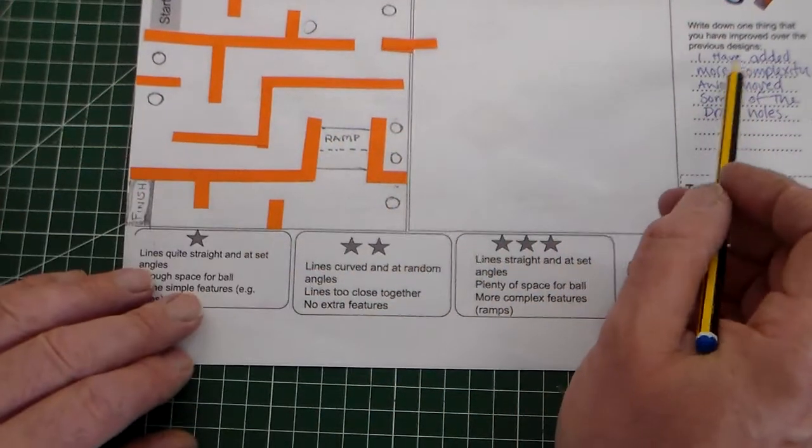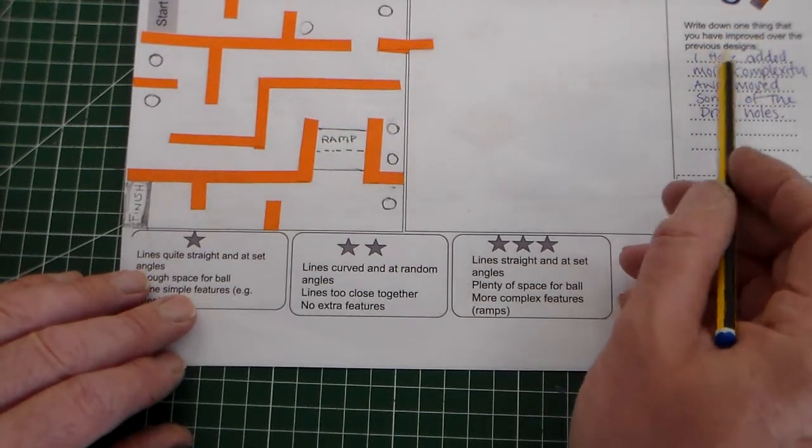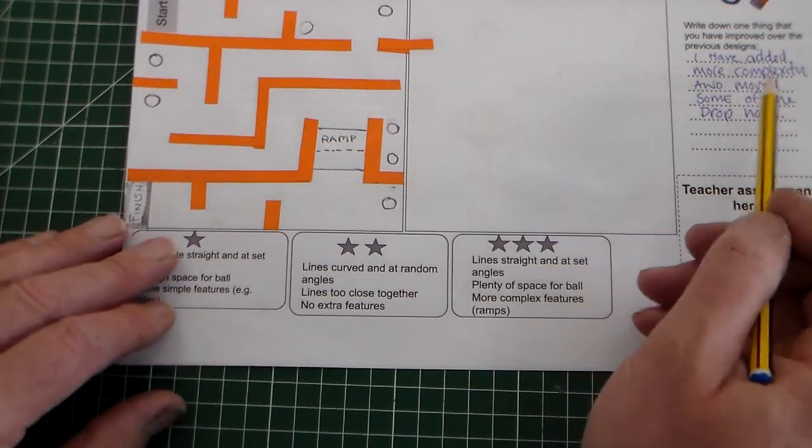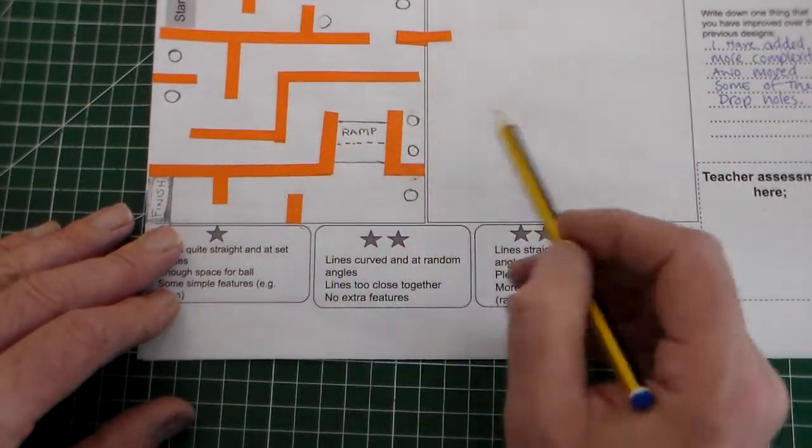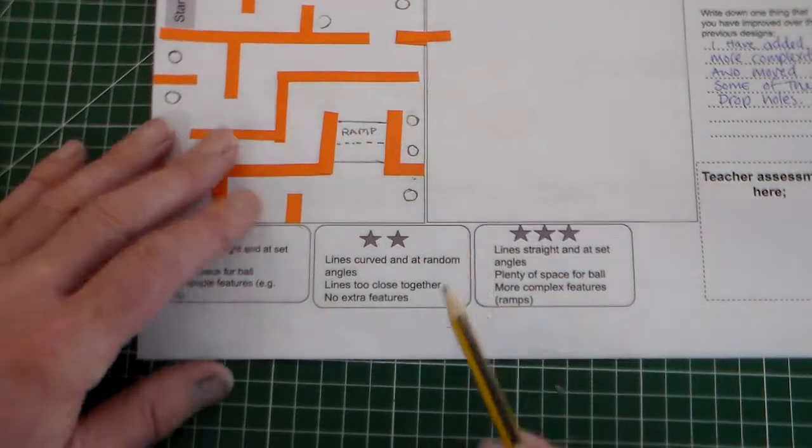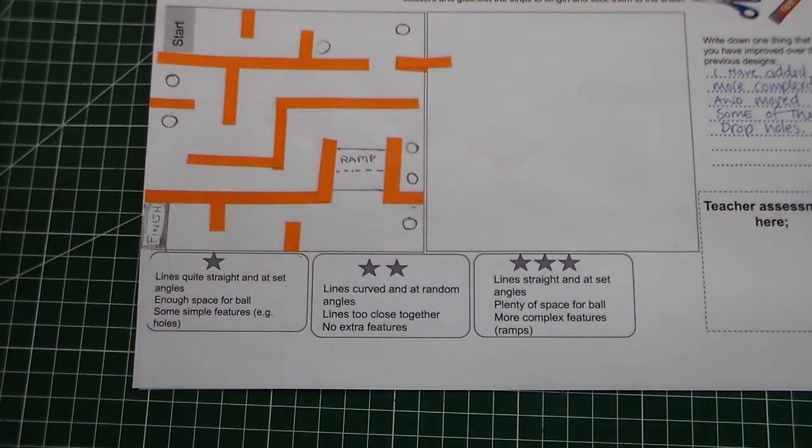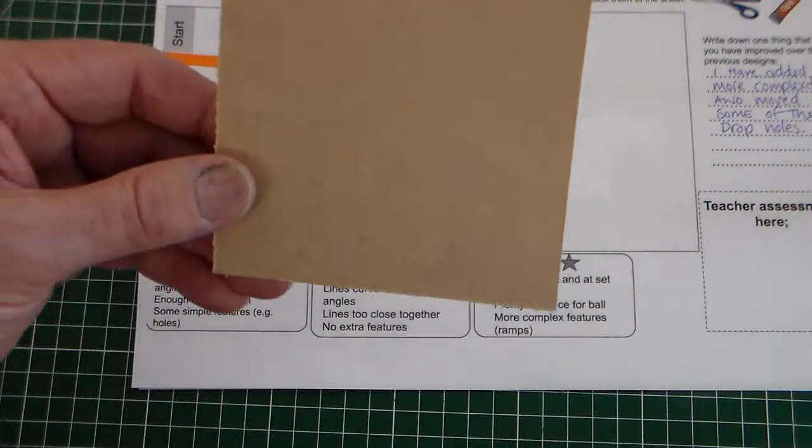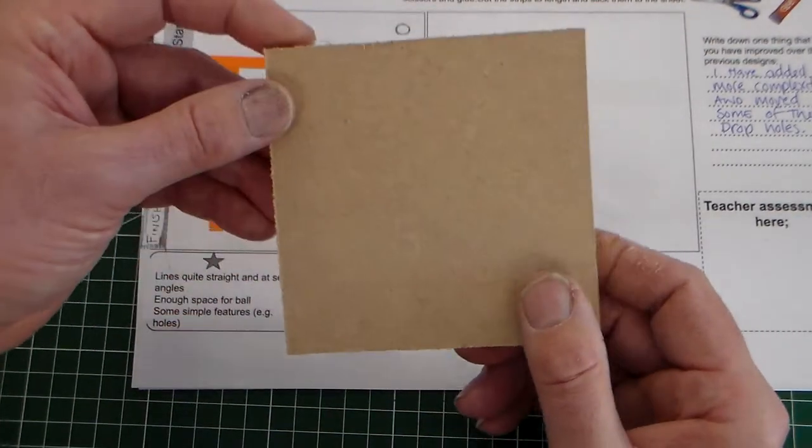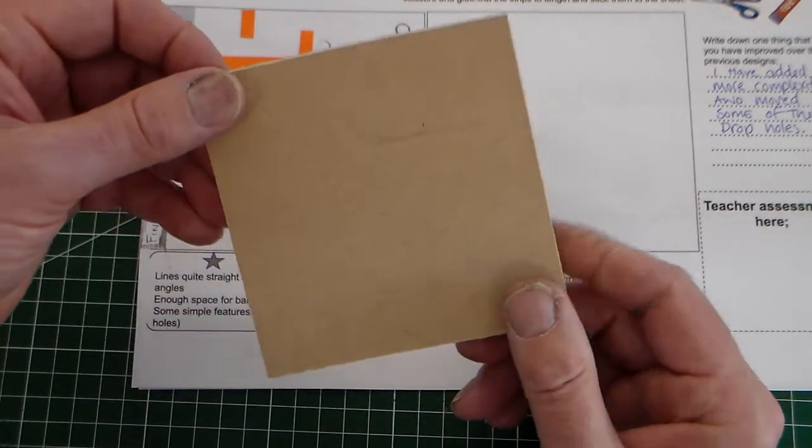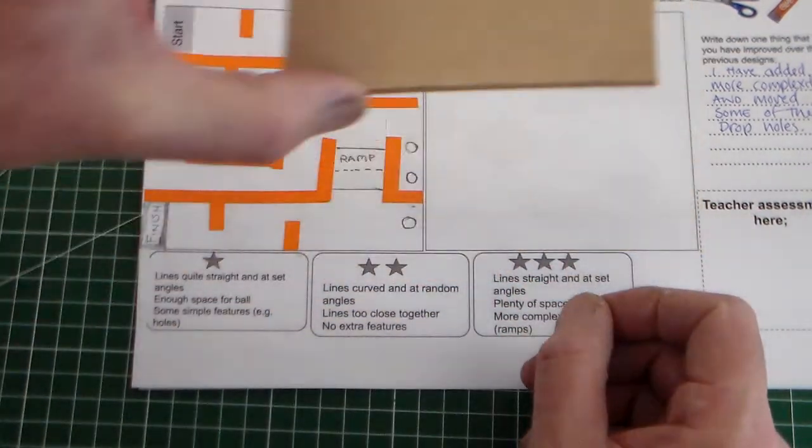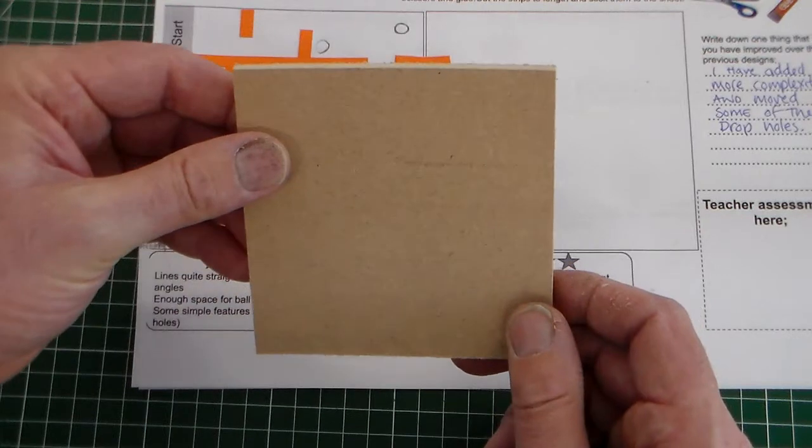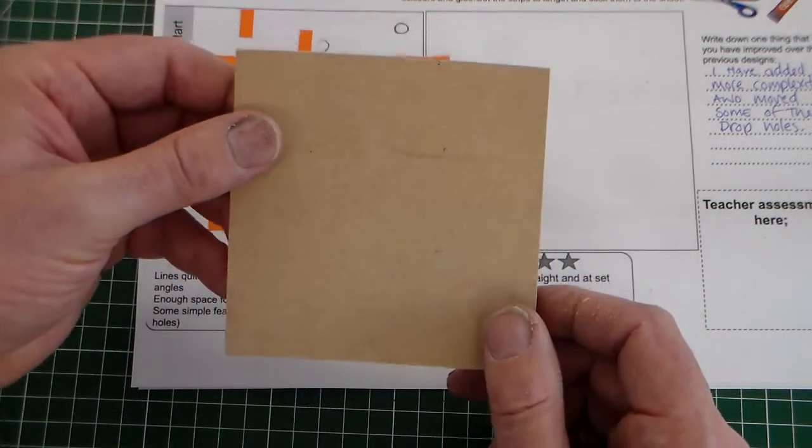Once we've got that, I've just made a little comment here saying, write down one thing that you've improved of previous designs. And I've added more complexity. I've added these parts here and I've moved some of the drop holes. So that's the design I'm going to work with. So the next thing we're going to do is we're going to get a piece of the 6mm MDF. The 6mm MDF fits here, and this will fit into the tray of your maze game.